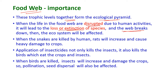When the web breaks down, the ecosystem will also be affected. For example, in an ecosystem, when snakes are killed by human beings, the rat population will increase and cause heavy damage to crops.